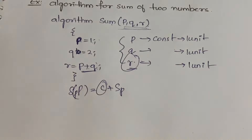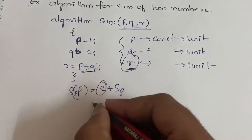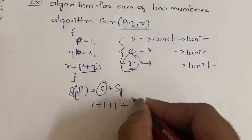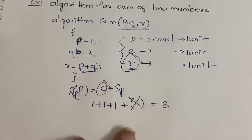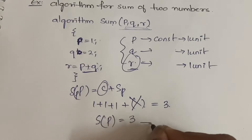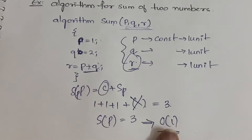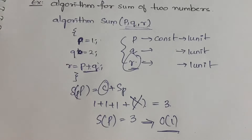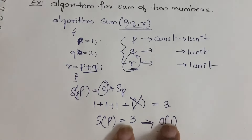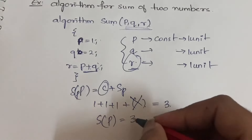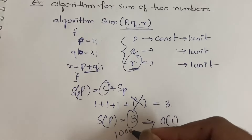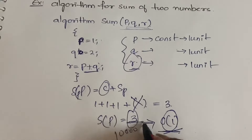So S(P) equals 3, which is written as O(1) — that is, order of 1. This algorithm has a space complexity of O(1). If you are having constants, you take it as O(1). Instead of 3, if you had 10 or even 10,000, it is still O(1). Whenever you get a constant result, you should take O(1). That's all.